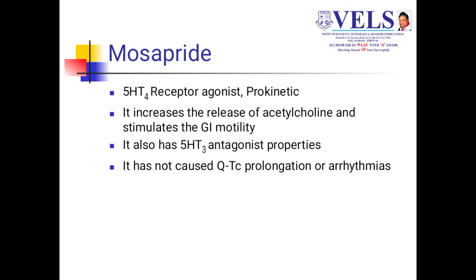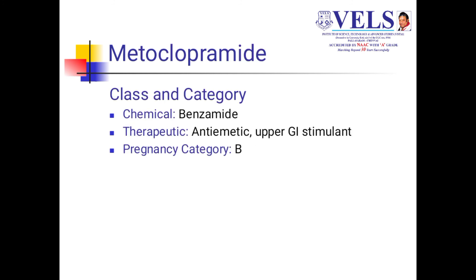Mosapride is a 5-HT4 receptor agonist and a prokinetic drug. It increases the release of acetylcholine and stimulates GI motility. It also has 5-HT3 antagonist properties.